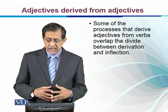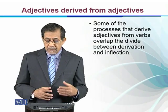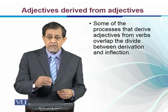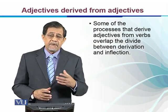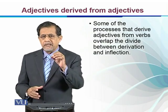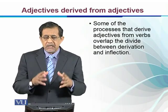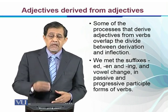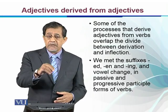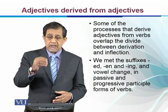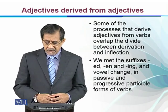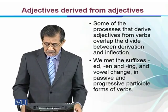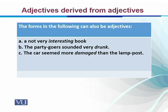Some of the processes that derive adjectives from verbs overlap the divide between derivation and inflection. So sometimes we get an adjective from a verb, and whether the addition is a derivational or inflectional process is a question. For example, the suffixes -ed, -n, and -ing: we use the past participle form of a verb as adjective, the -ing form as adjective, and the -n form as adjective. For example, 'a not very interesting book,' where 'interesting' is a present participle used as an adjective.